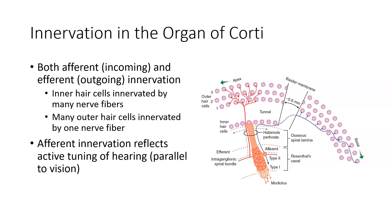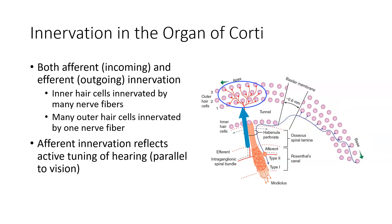Innervation within the organ of Corti includes both afferent, incoming information, as well as efferent, outgoing information. There is a many-to-one mapping that works differently for the inner and outer hair cells: the inner hair cells are innervated by many nerve fibers each, while many outer hair cells are innervated by a single nerve fiber. The presence of efferent innervation — outgoing information sent to the hair cells to change their behavior — reflects the fact that our hearing is actively tuned in a way similar to how vision works. It's not purely a passive receptive process; based on incoming information, the way the hair cells respond gets altered.